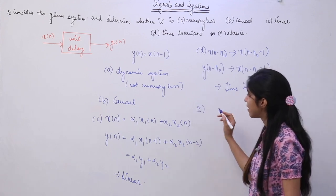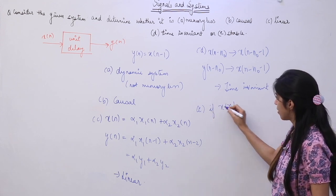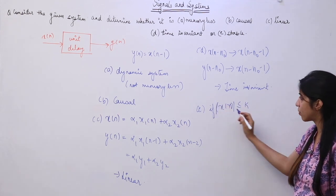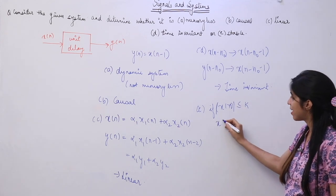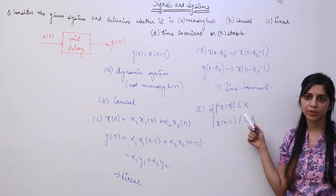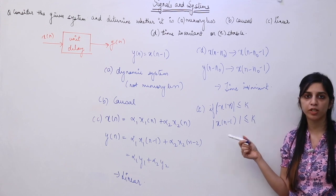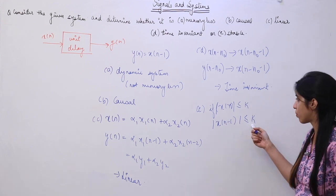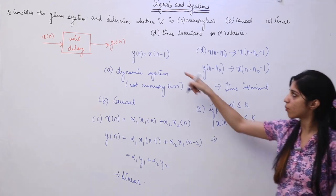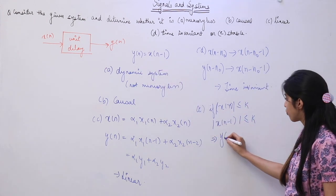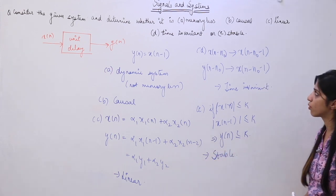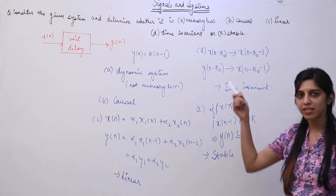To check stability: if x[n] is bounded, then x[n−1] is also going to be bounded. Because if a signal is bounded, even if you delay it or shift it by one unit, it is going to remain bounded. Therefore, if x[n−1] is bounded and y[n] equals x[n−1], then y[n] is also going to be bounded. So this system is going to be BIBO stable — bounded input, bounded output stable. This is how we check these parameters for a discrete time system.